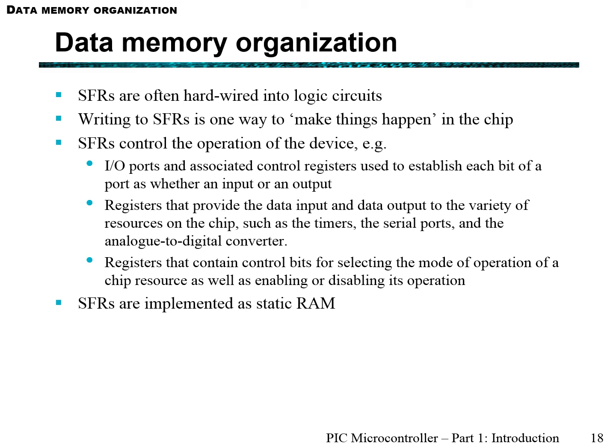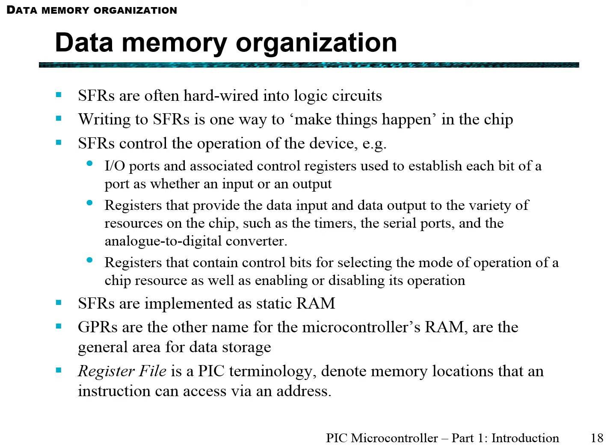Special function registers are hardwired into logic circuits — that's why they form this access RAM due to the hardwiring into the chip itself. They allow control of the operation of the device, for example changing the direction of the input-output ports, using the analog-to-digital converter, or interfacing with the timers. Contrasting this, you have general-purpose registers which are generally used by your program. When you declare a variable, it allocates memory within a general-purpose register to store that information. So if you allocate that variable as 5, then that specific general-purpose register becomes 5.